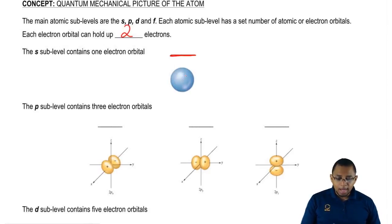The S sublevel has one electron orbital, therefore S can hold a maximum of two electrons.